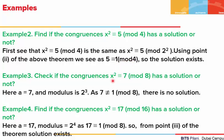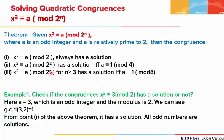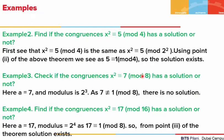In example 3, x squared is congruent to 7 mod of 8. We see that 7 and 8 are relatively prime, and 8 is 2 to the power 3. So we apply the third point and check whether a is congruent to 1 mod of 8 or not. Here, a which is 7 is not congruent to 1 mod of 8, so such a congruence is not solvable.